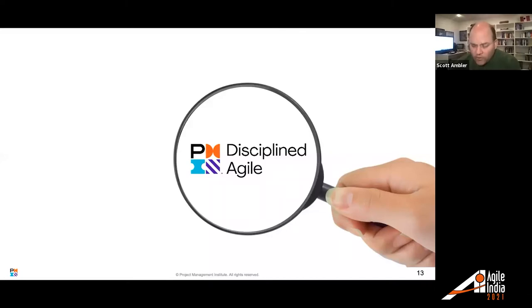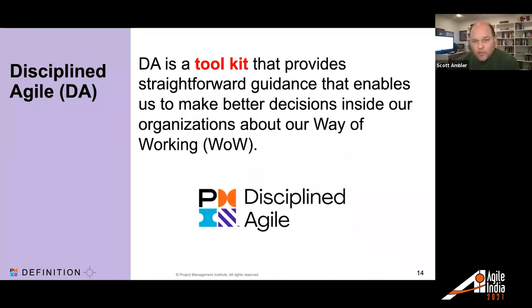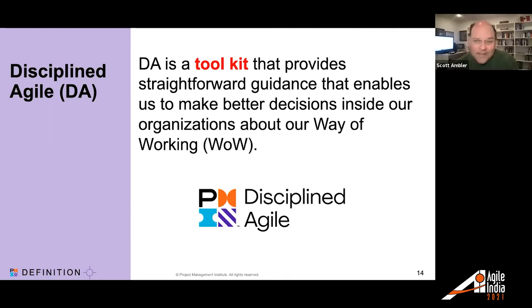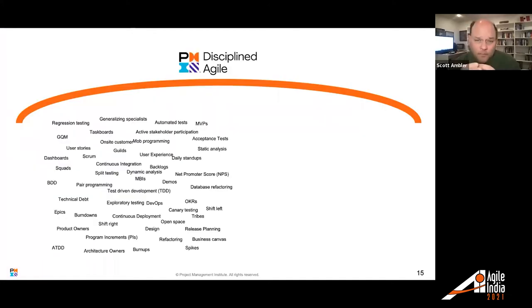I want to give you a brief introduction to Disciplined Agile so you can understand how to actually fix and address these data technical debt issues. Disciplined Agile is a toolkit, not a framework — and this is absolutely important. Where frameworks and methods tell you what to do, Disciplined Agile tells you what to think about, what to be concerned about, and then gives you options. The toolkit currently puts about 1,600 different techniques into context.